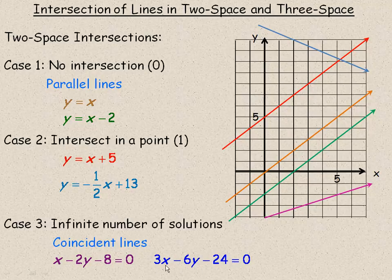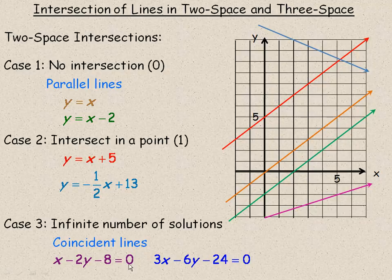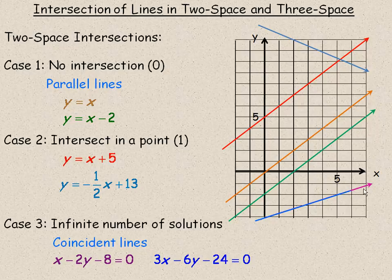Notice that this blue equation is actually just this one multiplied by 3, so it's just a multiple. The whole equation is a multiple. So when I graph this, it looks like this. It just writes right over top of the original line.